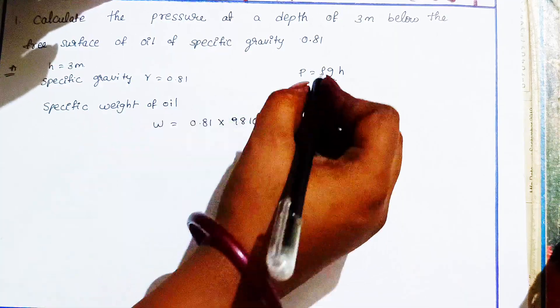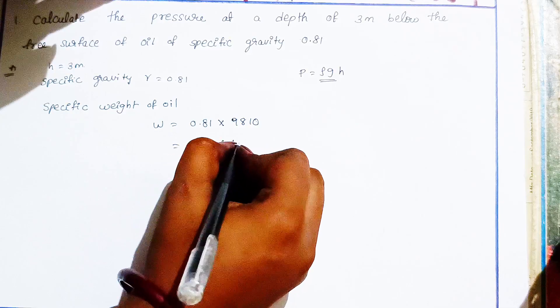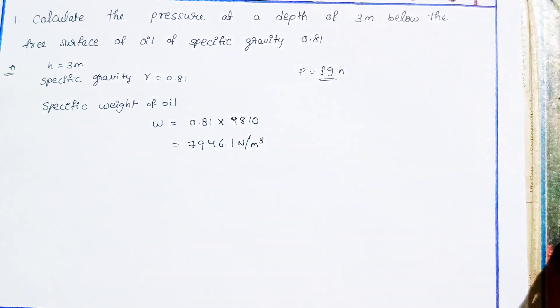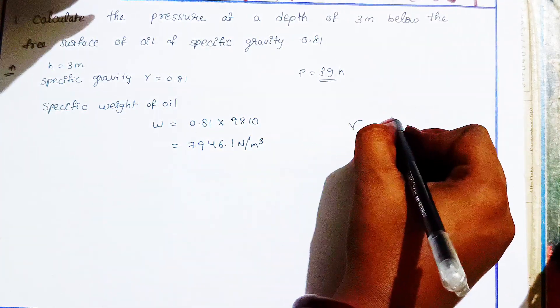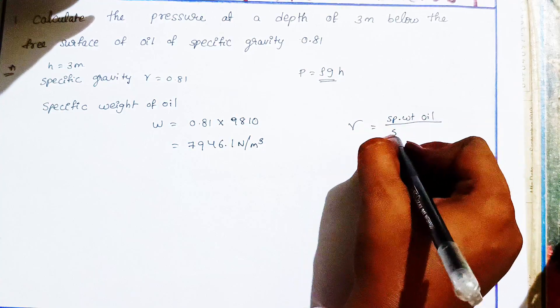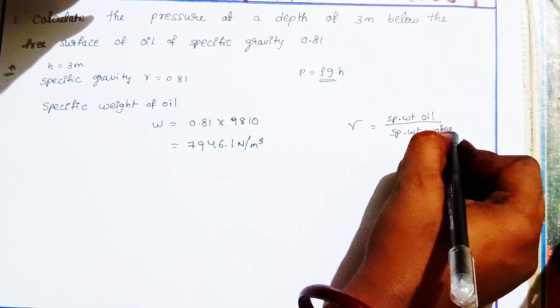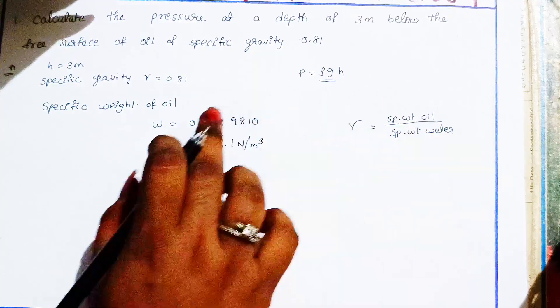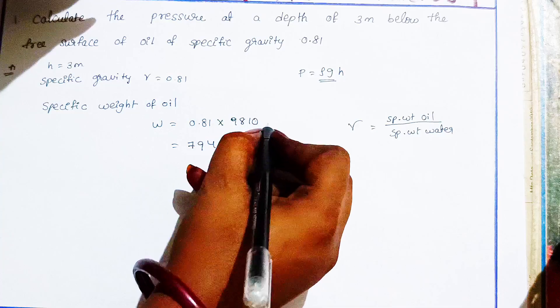Specific weight equals weight of oil divided by specific weight of water. We use gamma, the specific weight of water, which is 9810.